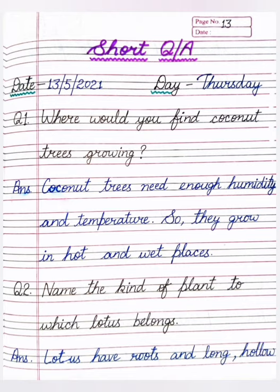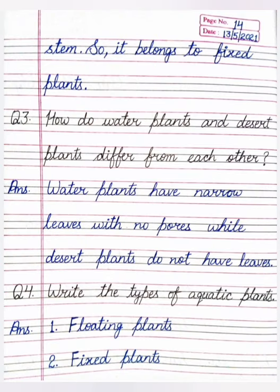Our second question is: name the kind of plant to which lotus belongs. Means lotus plant aquatic plants ki kis category se belong karta hai? Lotus has roots and a long hollow stem, and these kinds of plants belong to the category of fixed plants.